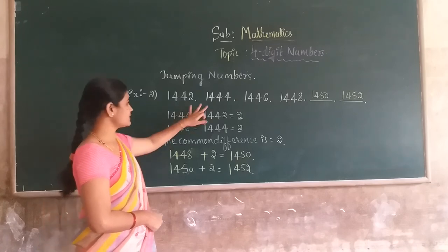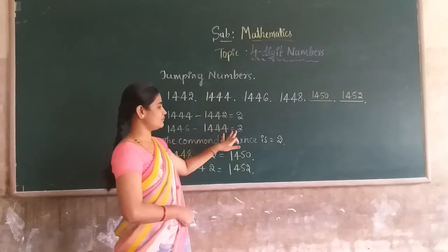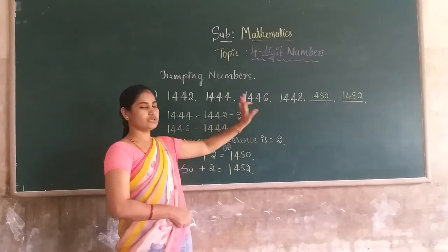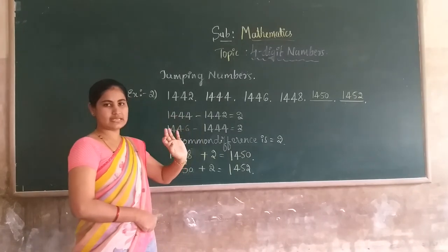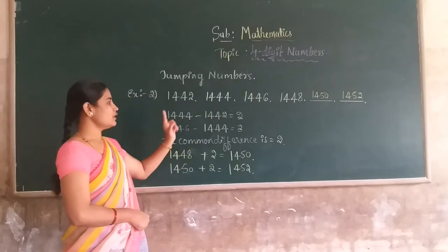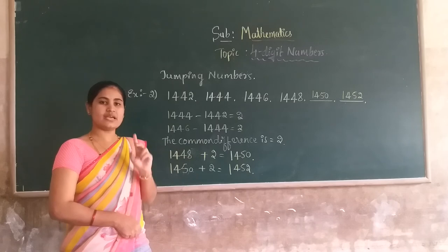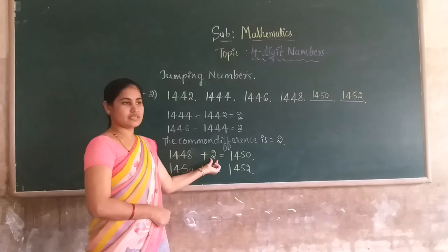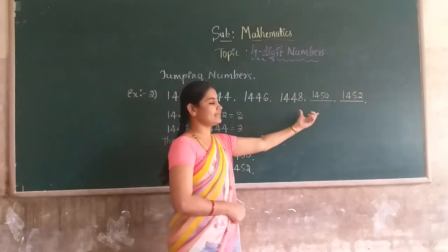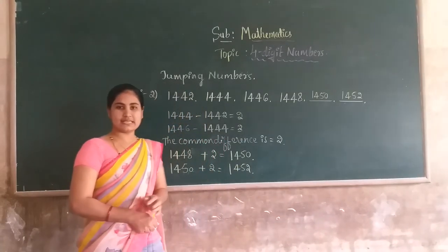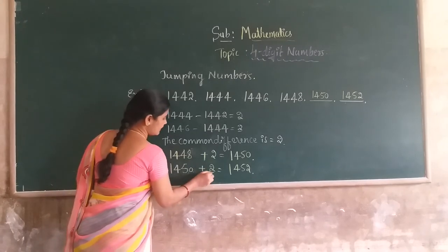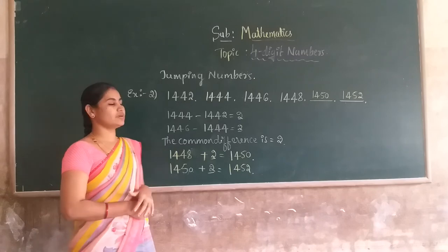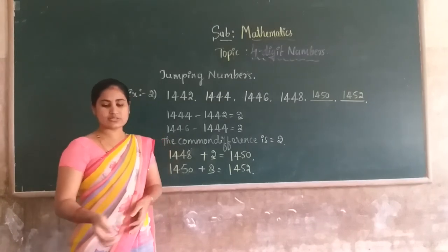First understand what is the common difference between the two numbers of the series. The common difference means you can jump that many steps at a time in the forward direction. Therefore, if you add the common difference to the last number, you will get the next number of the series.